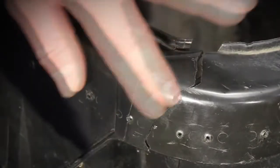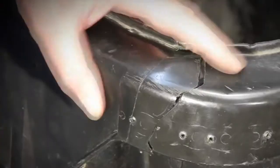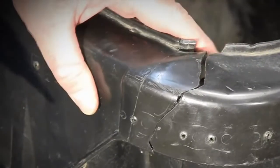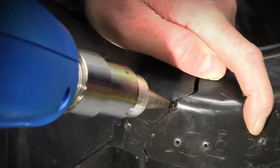Now I will use the Drader InjectiWeld to repair the top of the garbage can. I will start by making a few spot welds to hold the crack together.